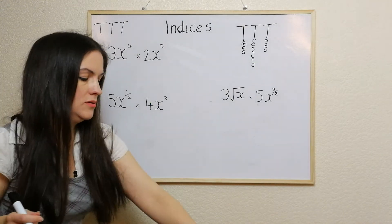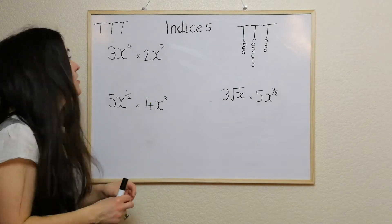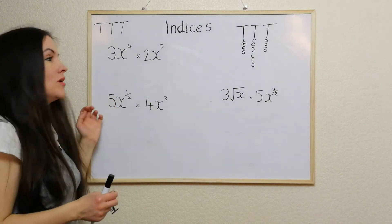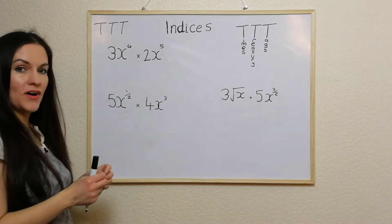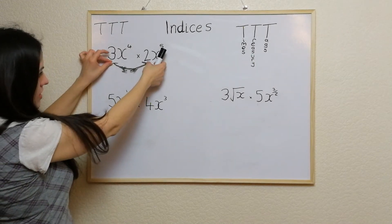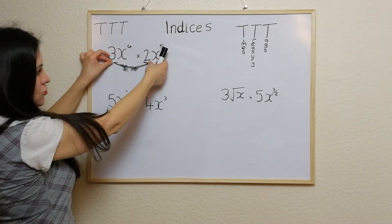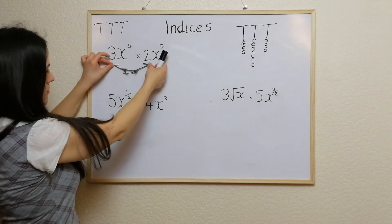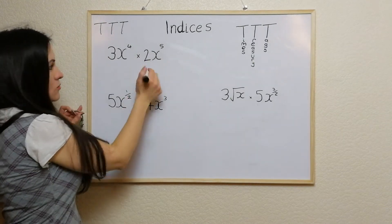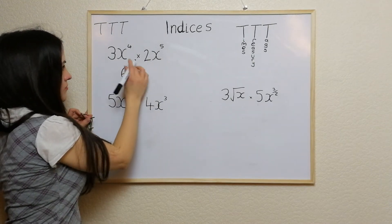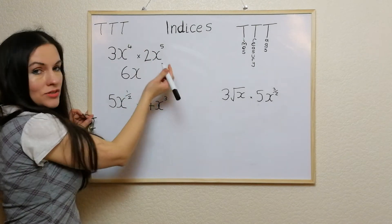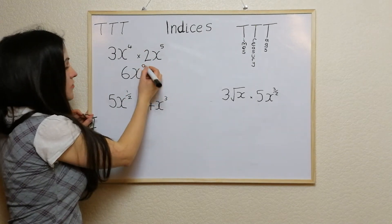We're going to use the treasury tags and I'm going to use an example where we've got 3x to the power of 4 times 2x to the power of 5. Using my treasury tags I'm just going to times the 3 by the 2 — that's 6. We write the letter x and we add the powers together, which is 9, because 5 add 4 is 9.